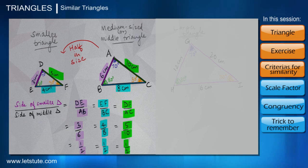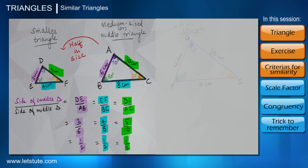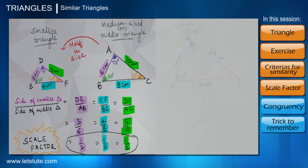Similarly, DF upon AC will give us 5 upon 10, which is again 1 upon 2. So we can see whenever we are taking the ratio of the sides of both of these triangles, we are getting the answer 1 upon 2. This particular number, 1 upon 2, will be called the scale factor. Please note that this scale factor is actually something really important when we are constructing similar triangles in geometry.